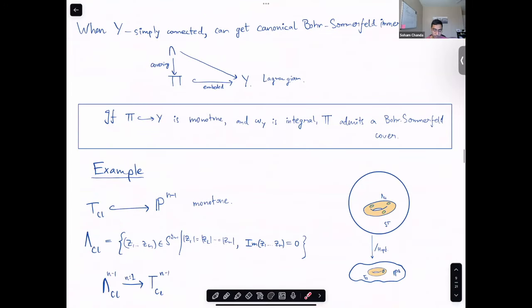Moreover, by forcing some conditions on the monodromy of this immersion, you can ensure that you also get embedded Lagrangians. So the takeaway is that if you have a Lagrangian immersion which satisfies this condition of Bohr-Sommerfeld-ness, you get Lagrangians inside Z. Now, in the case when Y is simply connected, you can get canonical Bohr-Sommerfeld immersions by taking covers of certain Lagrangians. Let's say Π is embedded inside Y as a Lagrangian and let's say for simplicity it is monotone.